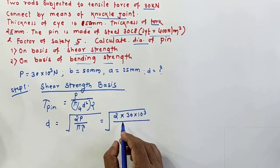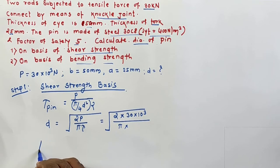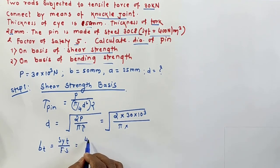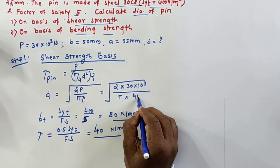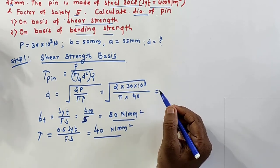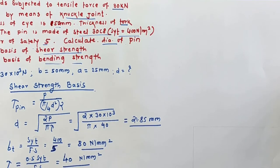Into 10 raised to 3 divided by pi into shear stress. So we'll have to calculate the permissible stress. First one is tensile, equal to SYT by factor of safety, which is equal to 80 Newton per mm square. And shear is 0.5 of SYT by factor of safety, which is equal to 40 Newton per mm square. So I'll get the diameter 21.85 mm dimension on the basis of shear.